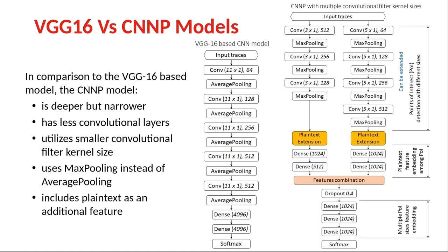In comparison to the VGG16-based benchmark model, our CNNP model is deeper but narrower. We use five fully connected layers with 1024 and 512 nodes, while VGG16 uses two layers with 4096 nodes each. Our model has fewer convolutional layers — only three or four — and uses smaller convolutional filter sizes of 3 and 5, whereas VGG16 uses a filter size of 11. Our model uses max pooling instead of average pooling to find the local point of interest, uses dropout to prevent overfitting, and uses plaintext as an additional feature.